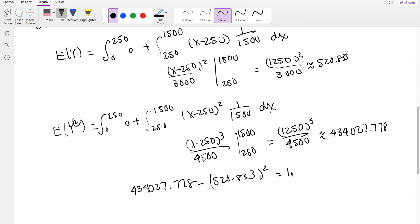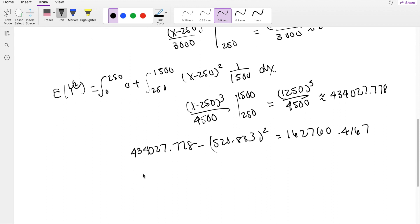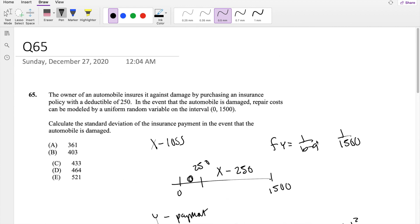And we know that standard deviation is just equal to the square root of variance, so this is equal to square root of 162,760.417, which is approximately equal to 403.43, which is our answer B.